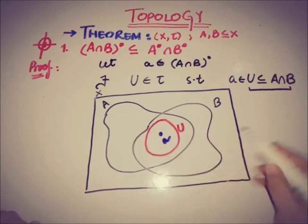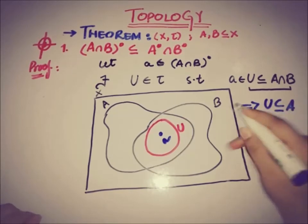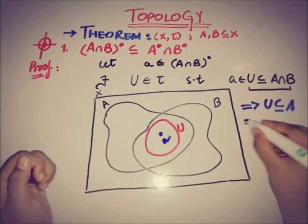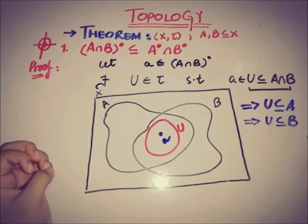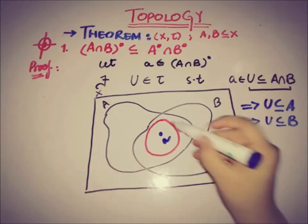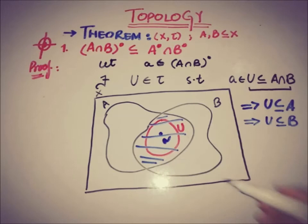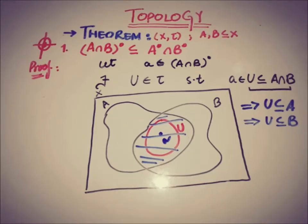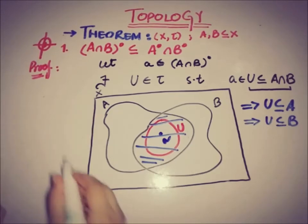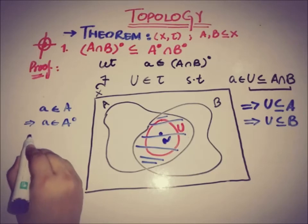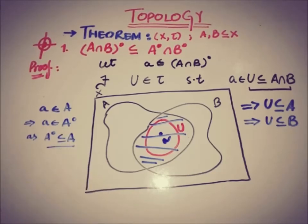Since U is a subset of A ∩ B, we can say that U is also a subset of A and U is also a subset of B. So the open set U, which is an open neighborhood of 'a' in A ∩ B, is also an open neighborhood of 'a' in A and an open neighborhood of 'a' in B. This means 'a' belongs to Int(A).